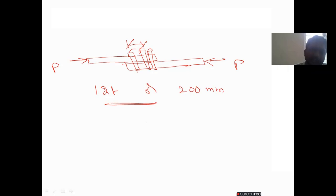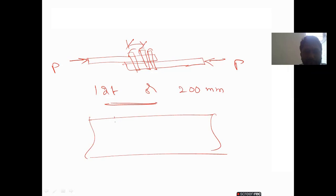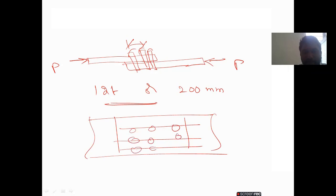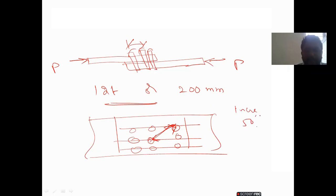For staggered bolts — when two bolts are arranged in a staggered pattern — these two we call staggered bolts. At that time, how the distance will be and how the pitch is determined: we have to increase the values by 50 percent.